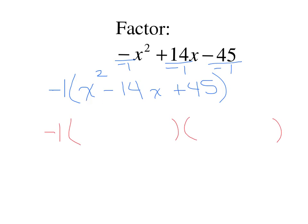Now factor the trinomial: x squared is x times x. Bring the first sign down. Multiply the two signs: negative times positive makes negative. We have same signs, so we need two numbers that multiply to make 45 and add to make 14. That would be 9 times 5, giving us negative 1 times the quantity x minus 9 times x minus 5.